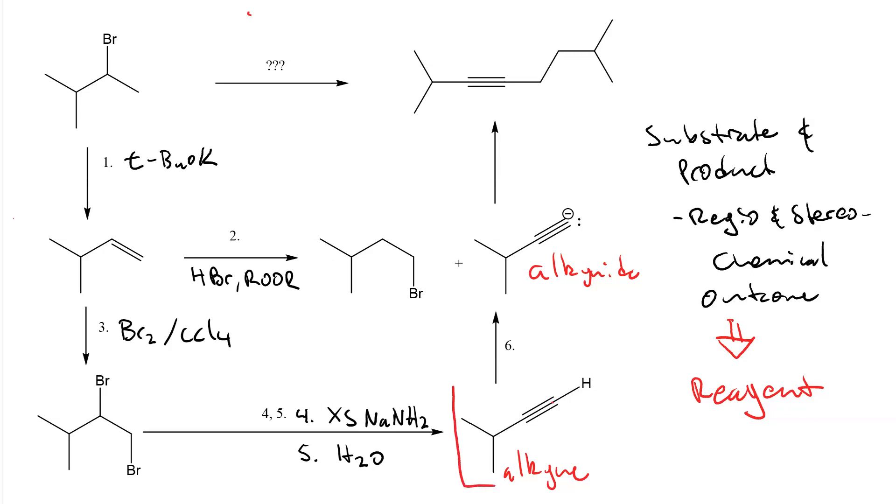In step six, our substrate is an alkyne and our product is an alkynide. We need proton transfer and the base that is strong enough to deprotonate an alkyne is sodium amide. Again, the solvent in this case must be ammonia, NH3.